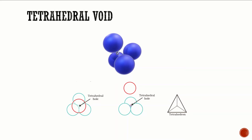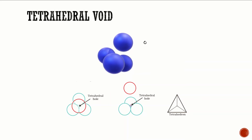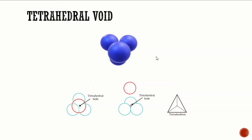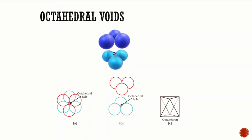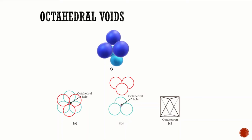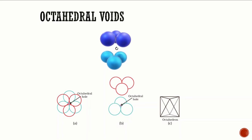Tetrahedral voids are so called because a tetrahedron is formed when the centers of the four surrounding spheres are joined. At other places, triangular voids in the second layer are above triangular voids in the first layer. The triangular shapes do not overlap — one has the apex pointing upwards and the other downwards. Such voids are surrounded by six spheres and are called octahedral voids.